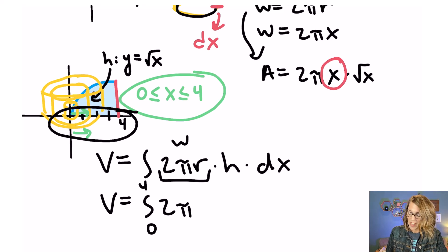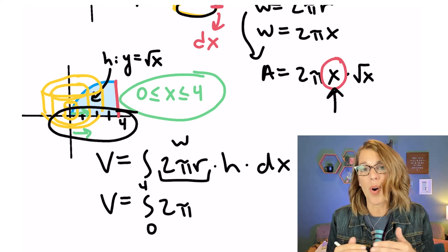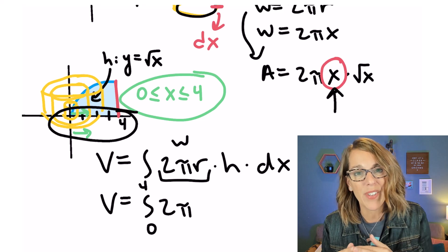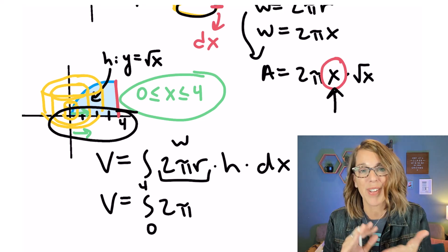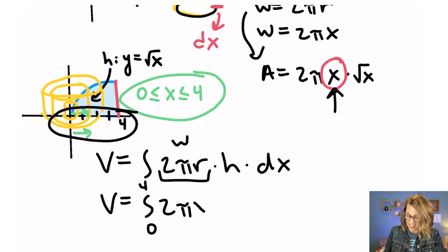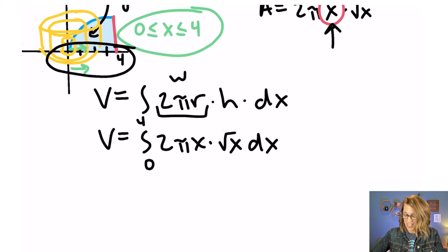2π. My radius is almost always either your variable of integration or it's just going to be some little altered form of the variable of integration. In this case it is just x. That's my radius. My height goes up to that curve which is the square root of x. And then I've got my dx. Once I'm here I'm in really good shape.